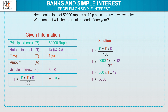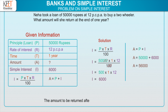Now, to find the amount, write the formula of amount: A equals P plus I. Put the values of P and I, so we get A equals 50,000 plus 6,000, that is A equals 56,000. Therefore, the amount to be returned after one year is Rs. 56,000.